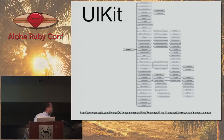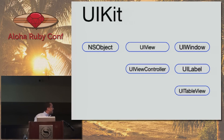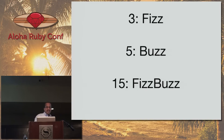Here's UIKit, which is a set of classes. We're only going to focus on six of these classes in UIKit. Everything inherits from NSObject. We have views, view controllers, windows, labels, and table views. We're going to use these as we go through our next demonstration.